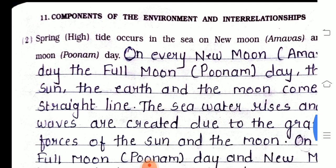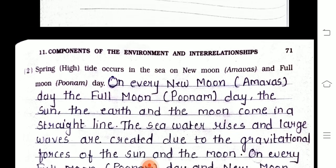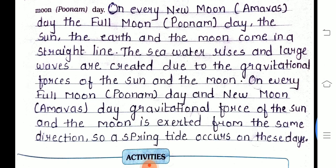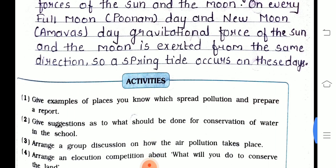Question number two — spring tides occur in the sea on new moon and full moon days. On every new moon and full moon day, the sun, the earth, and the moon come in a straight line. Seawater rises and large waves are created due to the gravitational forces of the sun and the moon. On every full moon and new moon day, the gravitational force of the sun and the moon acts from the same direction, so a spring tide occurs.